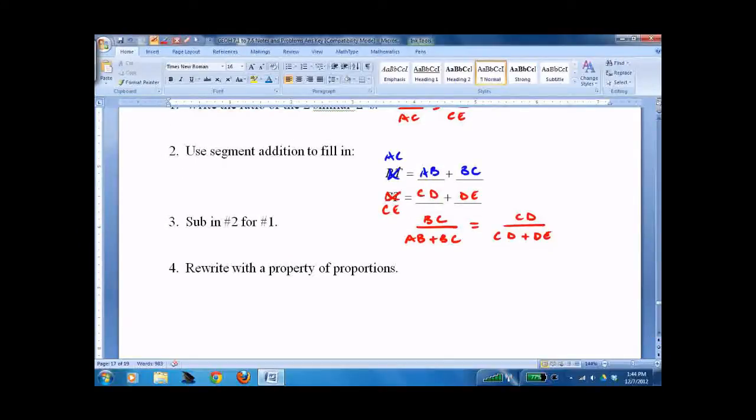And we can rewrite it with the property of proportions. We can flip all this first off, move them all up and down. So that we get AB plus BC over BC equals CD plus DE over CD. And we've done this before.